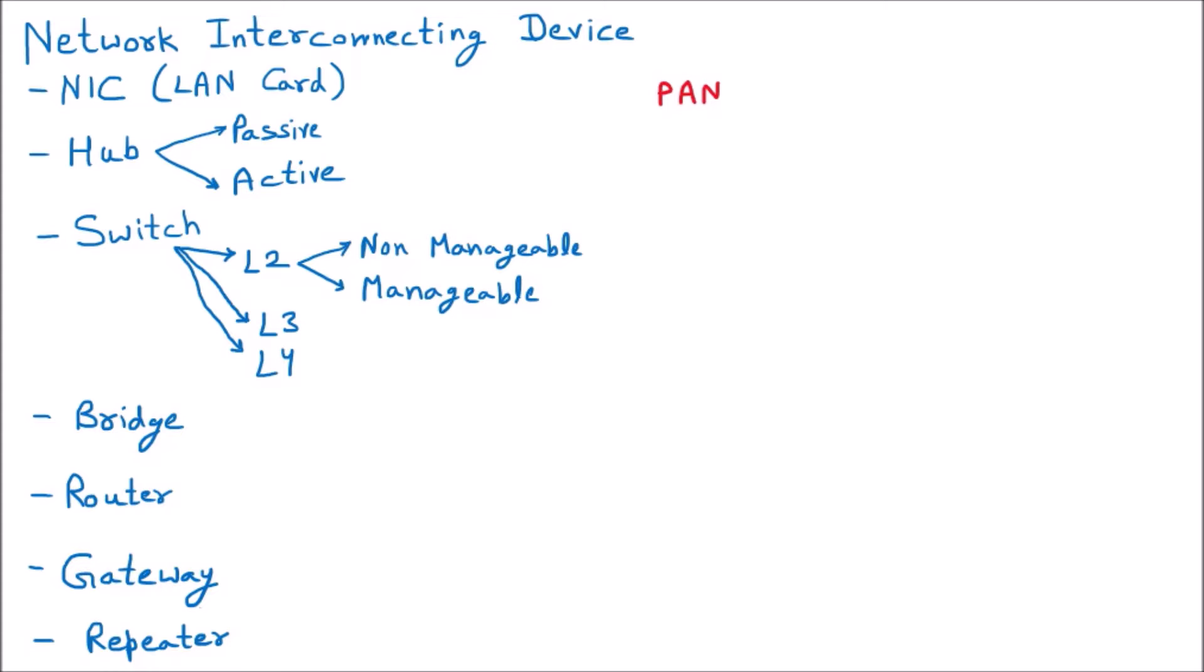Then afterward, we are having the LAN. LAN is the Local Area Network, which is up to 10 kilometers. In the LAN we are having hub and switches.